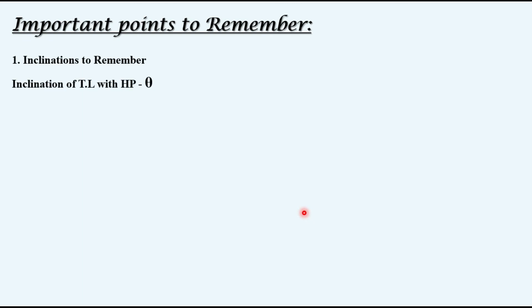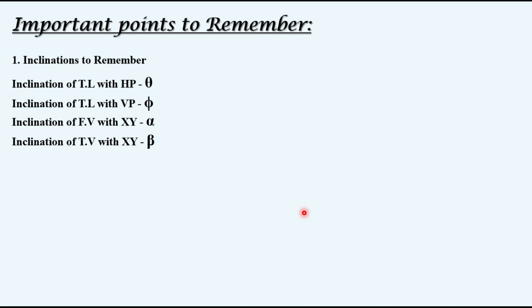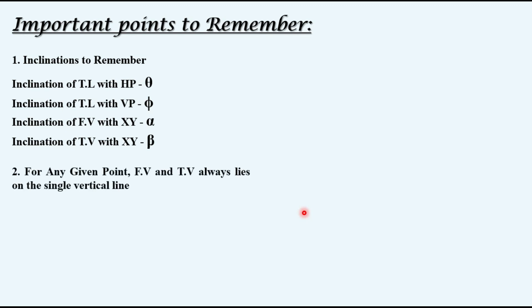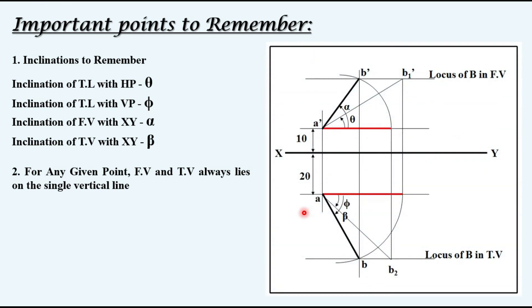Some important points to remember. Regarding inclinations: the true length inclination with HP is theta; the true length inclination with VP is phi; the inclination of the front view with the XY line is the apparent angle alpha; and the inclination of the top view with the XY line is the apparent angle beta. Second key point: for any given point, the front view and top view always lie on a single vertical projector. If you remember this solution procedure, you can solve any projection-of-lines question by altering the steps accordingly.